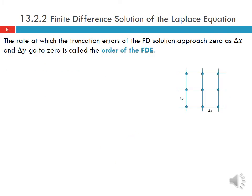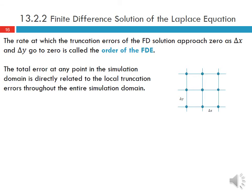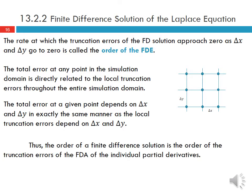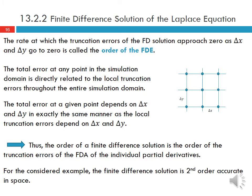This is the five-point approximation of the Laplace equation, defined by this stencil. The weights at the four neighboring points are all equal to 1, and the weight at the center point is equal to -4. The rate at which truncation errors of the finite difference solution approach zero as delta x and delta y go to zero is called the order of the finite difference equation. The total error at any point is directly related to the local truncation errors throughout the entire simulation domain, and depends on delta x and delta y in exactly the same manner. The order of the finite difference solution is the order of the truncation errors of the finite difference approximations of the individual partial derivatives.